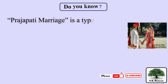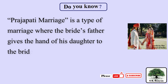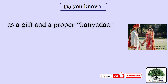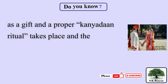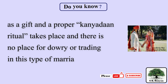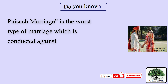Prajapati marriage is a type of marriage where the bride's father gives the hand of his daughter to the bridegroom as a gift and a proper Kanyadan ritual takes place, with no place for dowry or trading. Paisacha marriage is the worst type of marriage, which is conducted against the wishes of the bride, who has been enticed into a sexual activity while sleeping.